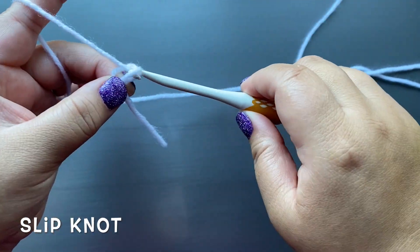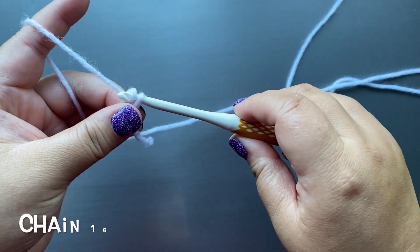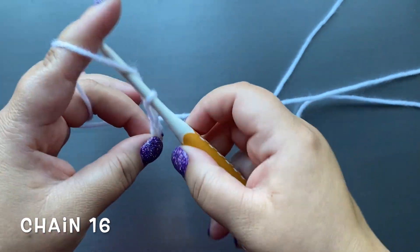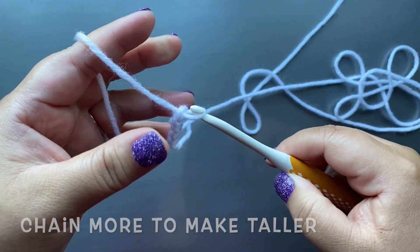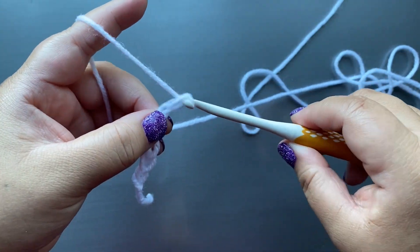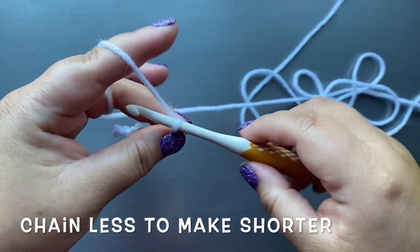With your white yarn, create a slip knot. Chain 16. If you want your headband to be taller, chain more here. If you want your headband to be shorter, chain less here.